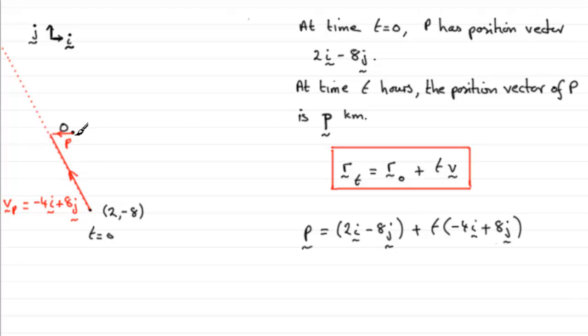What you're having to do is to go from the origin down to here, the starting point, 2i minus 8j, followed by, that's the plus, 1 lot of minus 4i plus 8j. So p for 1 hour would be down to here plus this vector.